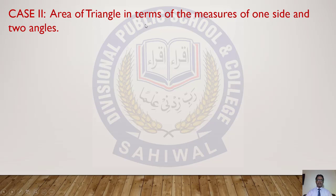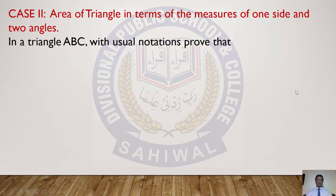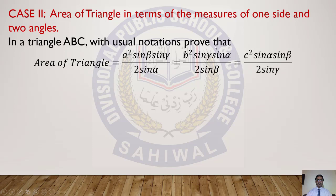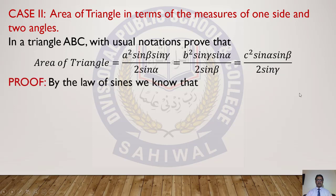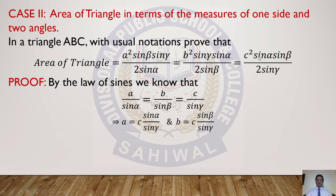Now we discuss the second case: area of triangle in terms of the measures of one side and two angles. When one side and two angles are given, in triangle ABC with usual notations, we prove that area = a² sin β sin γ / (2 sin α), or area = b² sin γ sin α / (2 sin β), or area = c² sin α sin β / (2 sin γ). Suppose we prove the last one. We start by using the Law of Sines: a/sin α = b/sin β = c/sin γ.